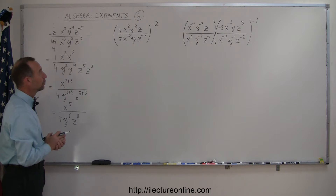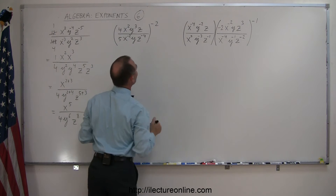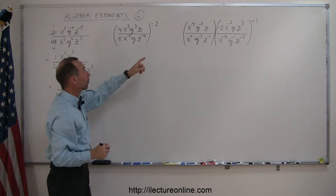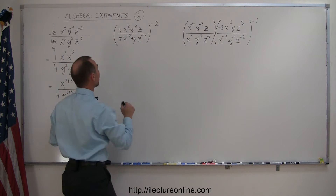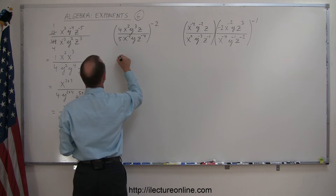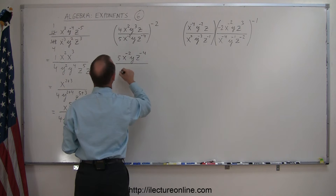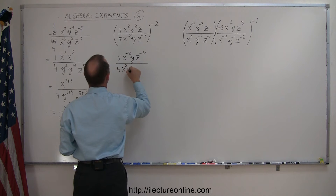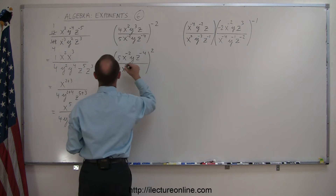Next example. Notice how the whole expression in parentheses is raised to the negative 2 power. What I can do is make that into a positive 2 power and simply flip the fraction around. So this becomes 5x⁻², yz⁻⁴ divided by 4x², y³, z, all raised to the positive 2 power.